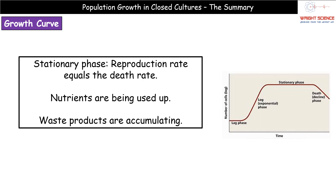The third phase is the stationary phase, characterized by a horizontal line - the number of cells is neither increasing nor decreasing. The reason is that the reproduction rate is equal to the death rate. This is one of those phrases where we must be precise: use the word 'reproduction', not 'birth rate'. Because bacteria are single-celled with no birth canal or reproductive structures in that sense, writing 'birth rate' will not get you the marks. You have to say reproduction rate equals death rate.